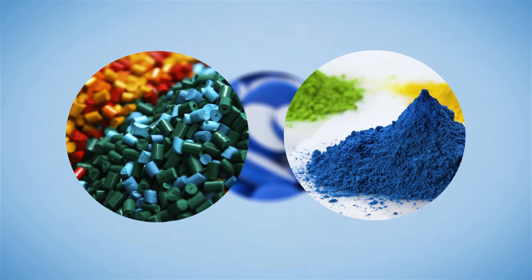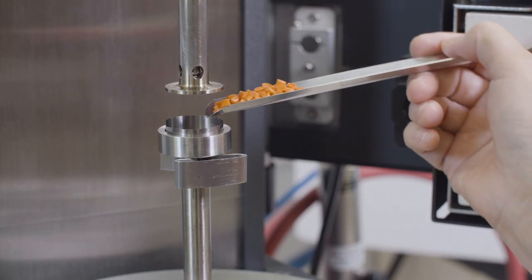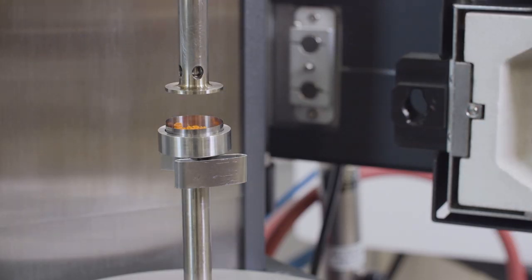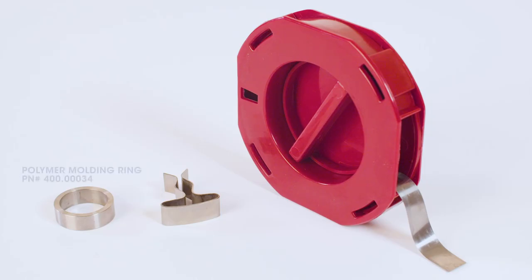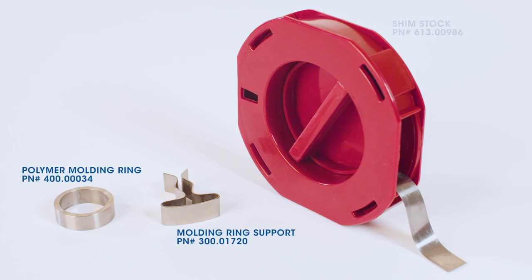Polymers can be in irregular shapes such as powder or pellets. In order to load these kinds of polymers to a parallel plate geometry, we will need to have the following accessories: the polymer molding ring, molding ring support, and shim stock.